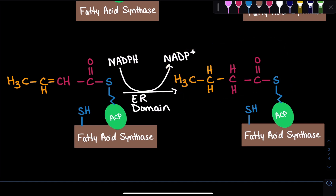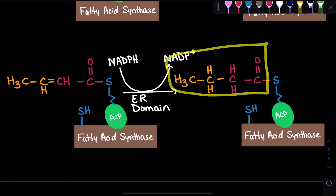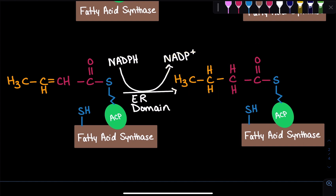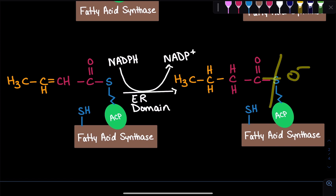If we take a look, this is exactly what a fatty acid looks like — multiple carbons, saturated, with a terminal oxygen bound. Once this gets cleaved, we'll see the other oxygen.